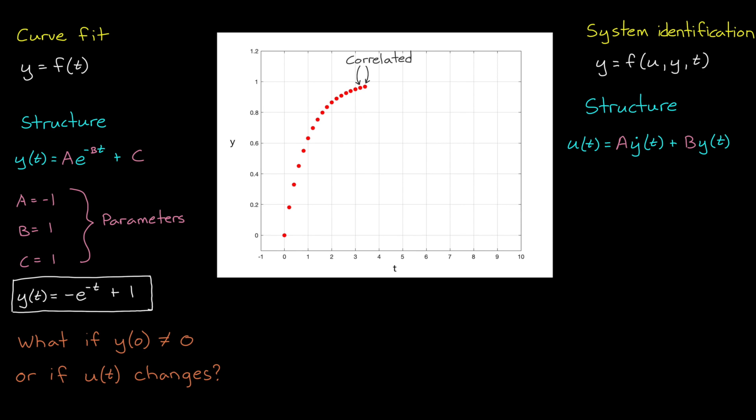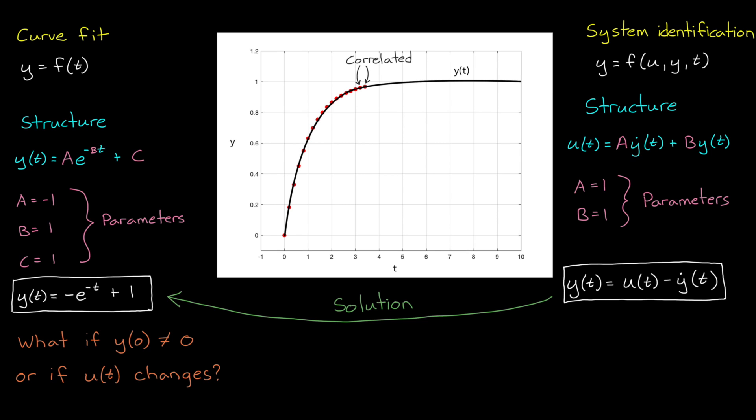In this case, we could choose a first order differential equation for the structure of the model, and then choose parameters A and B to fit it to the data. Now, the solution to this equation is the exponential we found earlier. So they produced the same curve. But now we have a model that we can use to predict what the data would look like from different starting conditions, and with different inputs, which is a lot more powerful than just curve fitting.